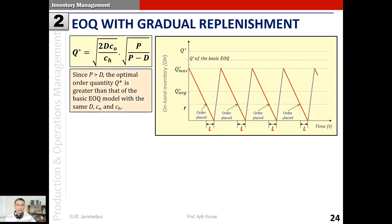Since p is always greater than d, the optimal order quantity q* is greater than that of the basic EOQ model for the same d, co, and ch. Why is p always greater than d? Because the replenishment rate once inventory hits zero necessarily has to exceed the demand rate to prevent a stockout. If p were less than d, there would be a stockout. In the extreme case p equals d - continuous flow with no inventory building up - which is theoretically possible but not practical.